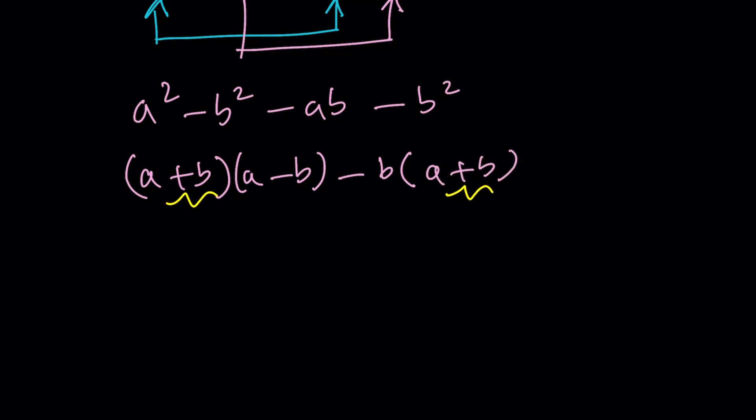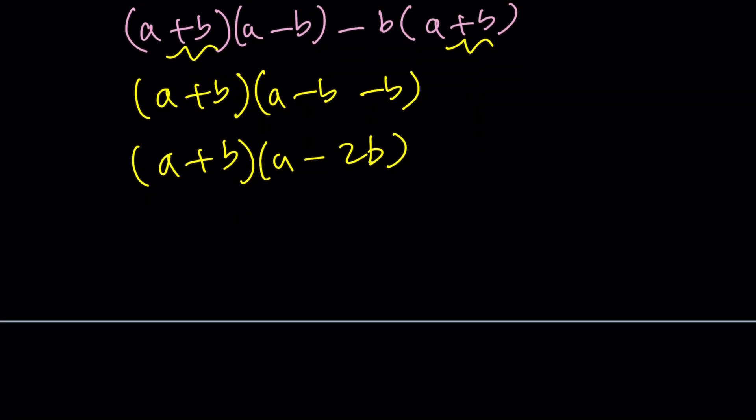Let's take it out: a plus b times this is a minus b minus b, which gives us a minus 2b. Set it equal to 0.